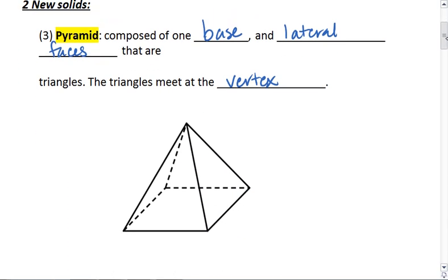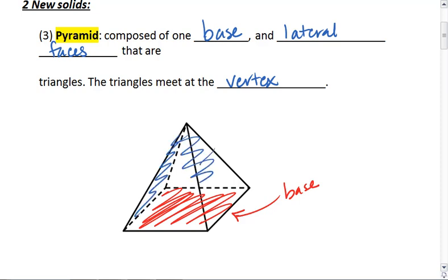Looking at our drawing below, the square down here is our base. The four triangular sides are our lateral faces. And the vertex, where they meet, is up top.